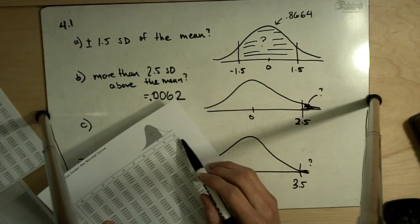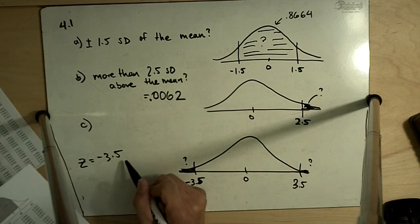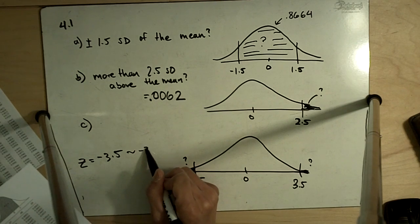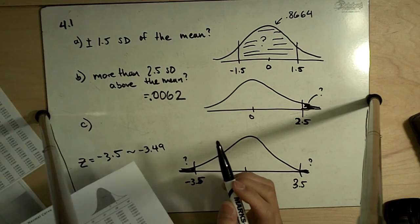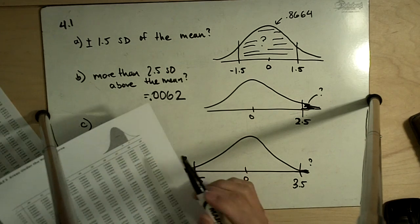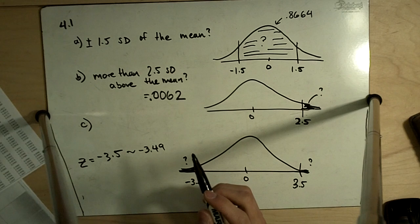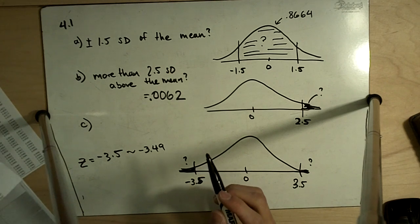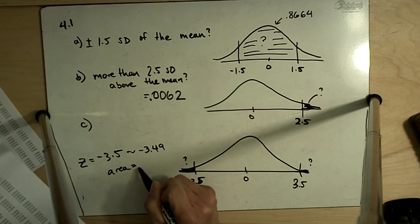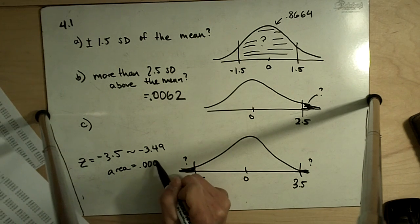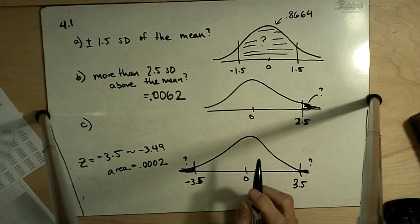Our table doesn't go out there. It only goes to 3.49. So we're going to have to round down to negative 3.49. That's the closest we can get to negative 3.5 standard deviations. And that corresponds to an area of 0.0002.